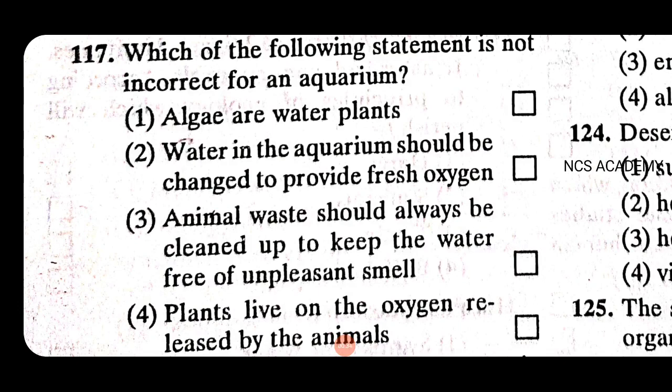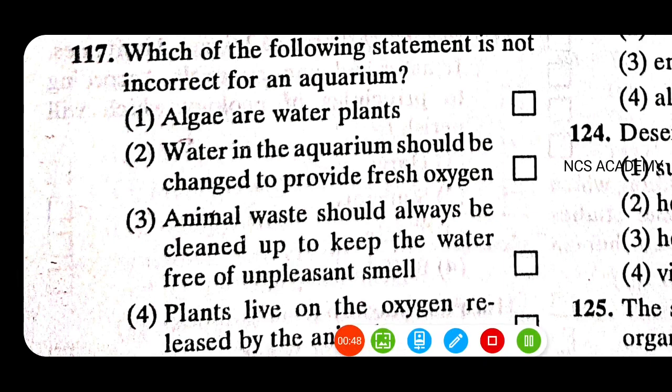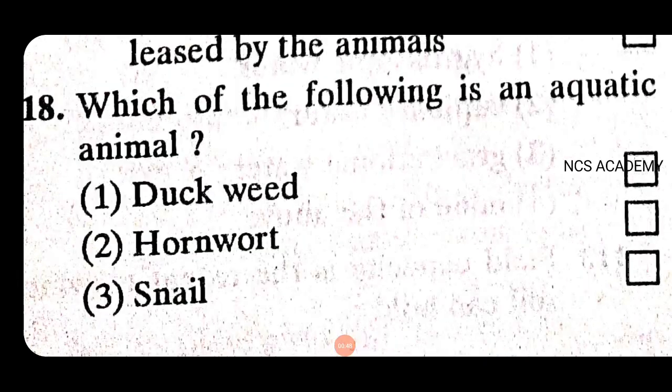Which of the following statements is not incorrect for an aquarium? Algae or water plants — this is incorrect. Which of the following is an aquatic animal? Snail is the right answer.